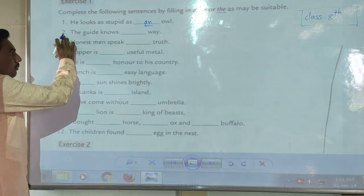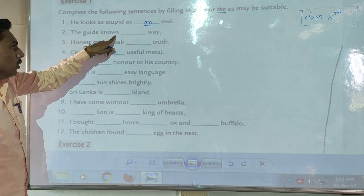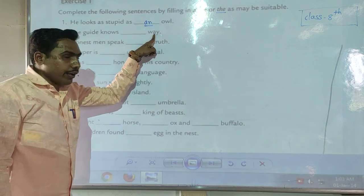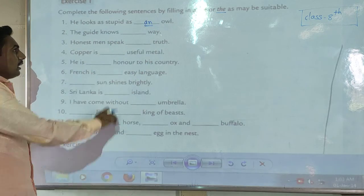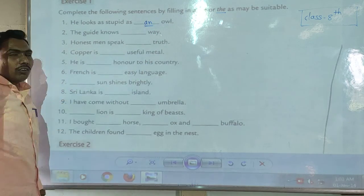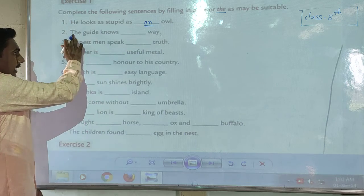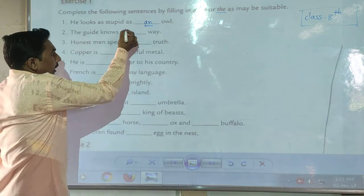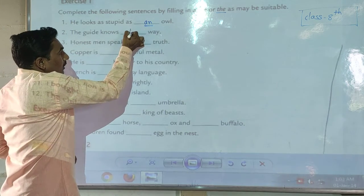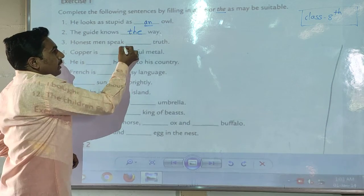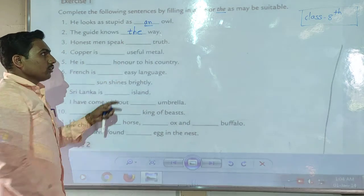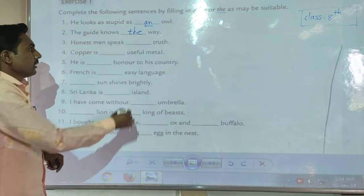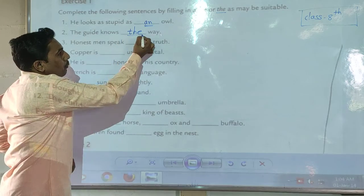Now the second example: 'The guide knows ___ way.' Here is the blank, and now we can complete it. The guide knows the way. Here we use the article 'the.'